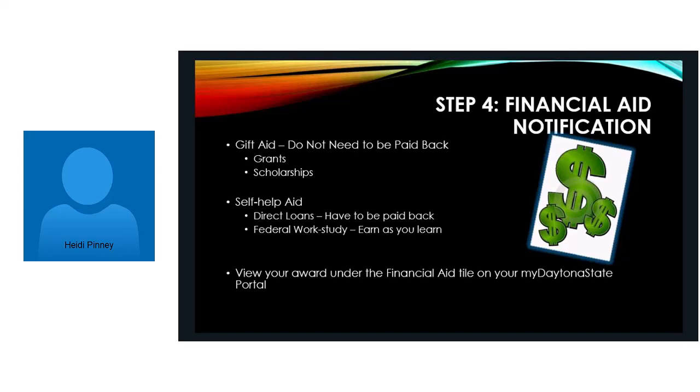The other thing that you might see on your financial aid notification is self-help aid, in the form of direct loans. Direct loans are just that — they are loans. They do have to be paid back at some point, whether it be while you're in school — because you do have the opportunity to pay interest on certain loans while you're in school — or you can defer them until six months after you graduate. This office and financial aid can walk you through the difference between the types of loans and your options.